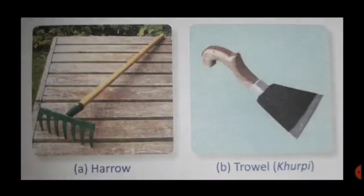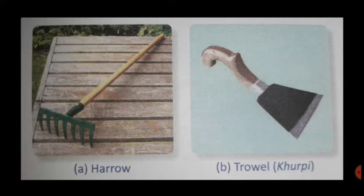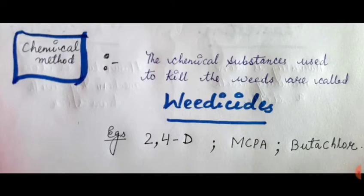The mechanical method involves the use of some implements. The implements that may be used are harrow, rake, and trowel — also known as kurpi. You can see in the diagram: harrow and trowel are used for removing the weeds mechanically.